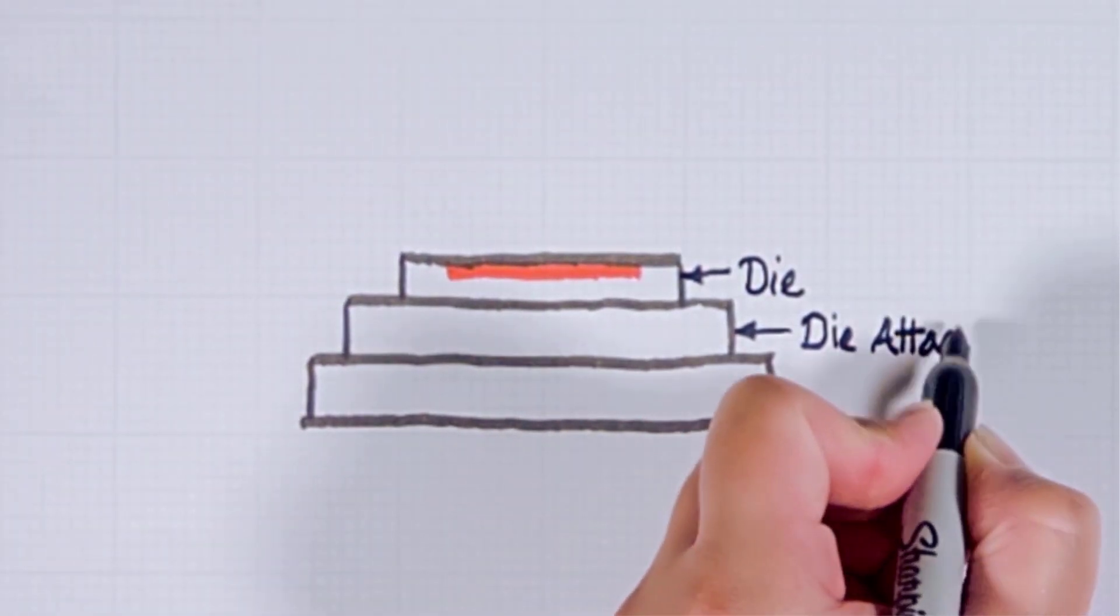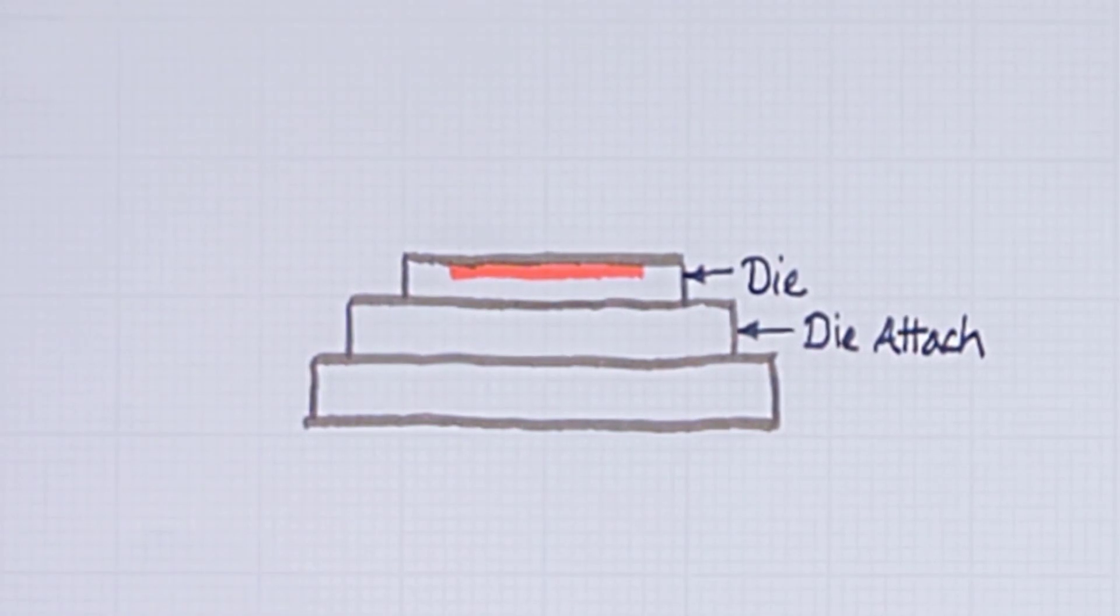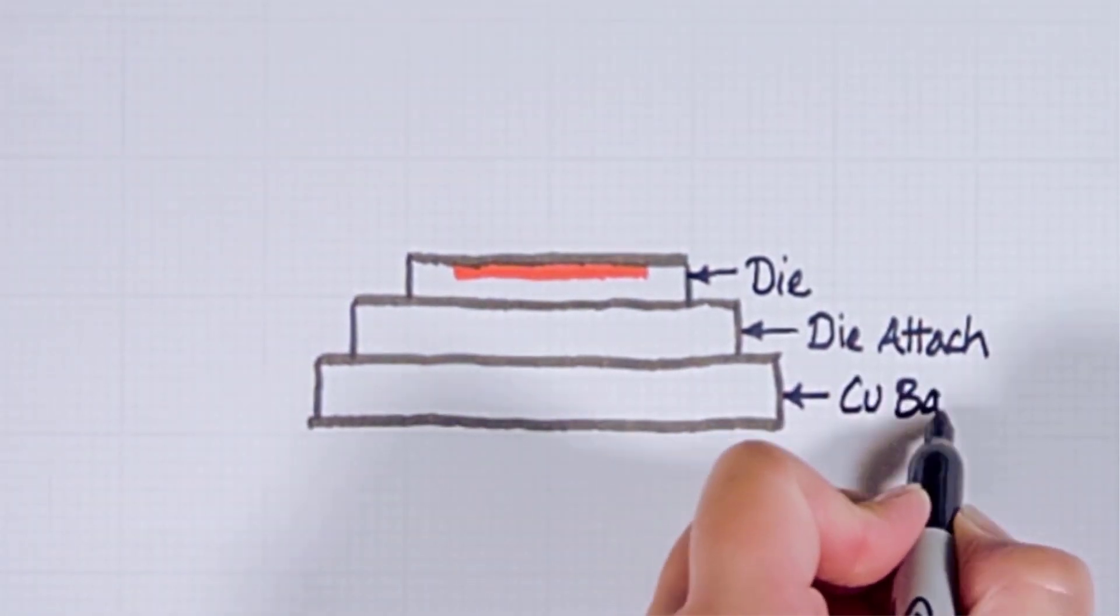Here is the die attach. Die attach is not normally this thick but I have drawn it like this to make it easier to see. And here we have a copper base.